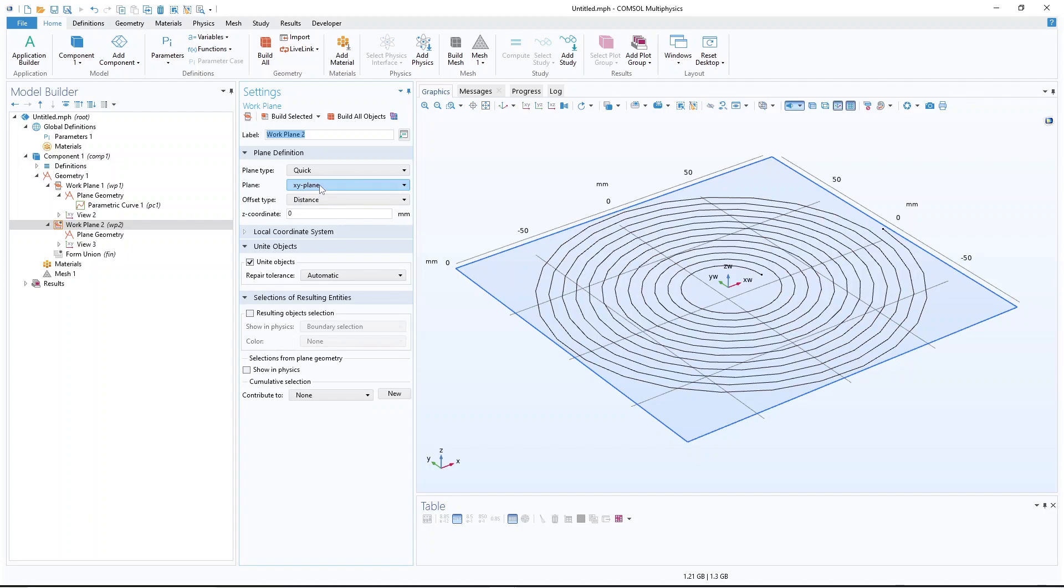So I should change the work plane. This one right now is x and y, but I want x and z. So I select xz work plane.